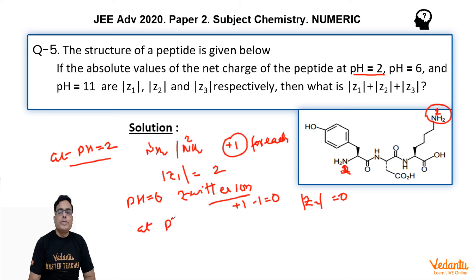Now at pH equal to 11, which is highly basic pH, this COOH, this COOH, and this COOH will become anionic, and even this phenolic group which is acidic in nature will become anionic. So total minus 3 charge, and that's why mod z3 is equal to 3.